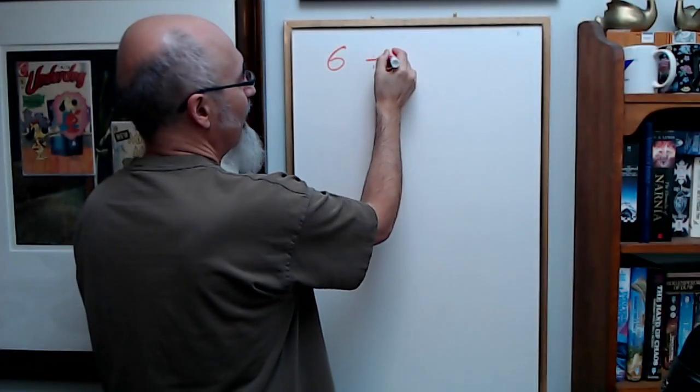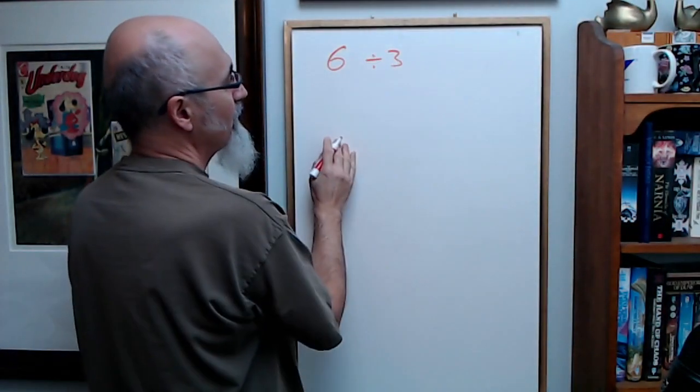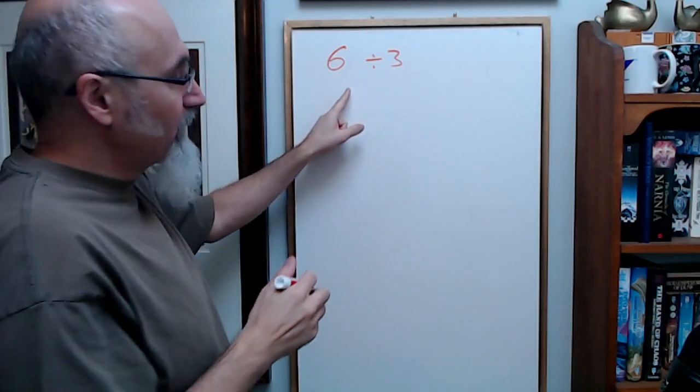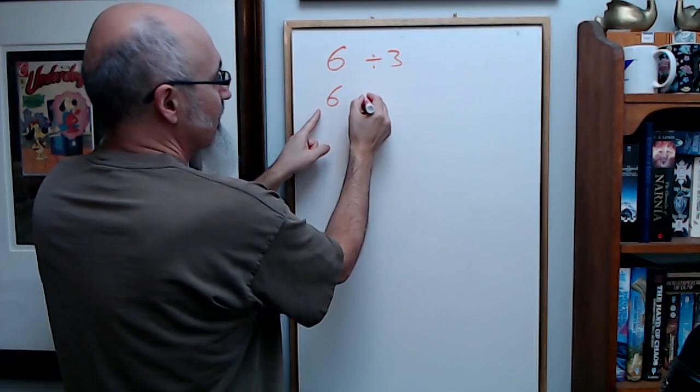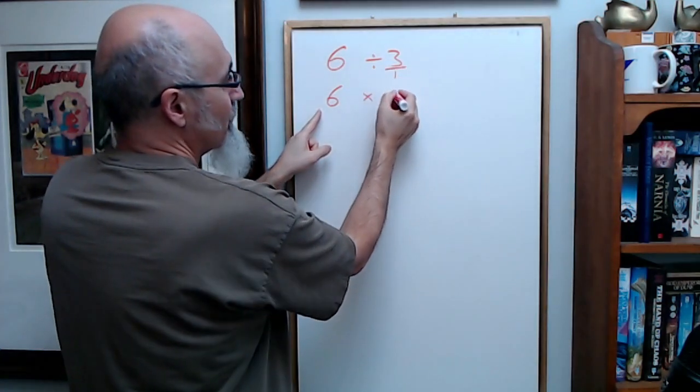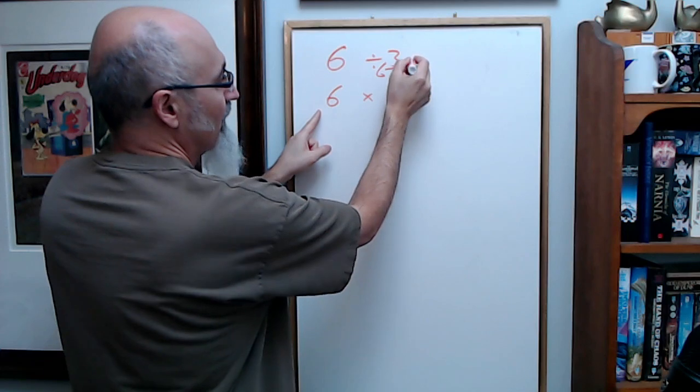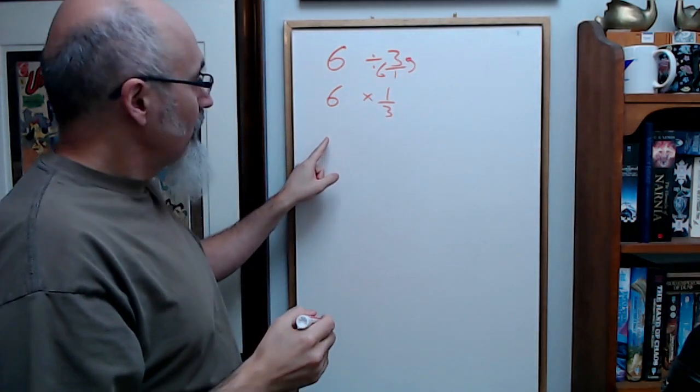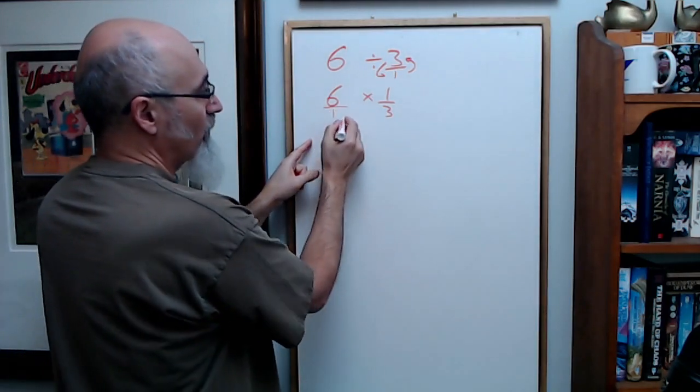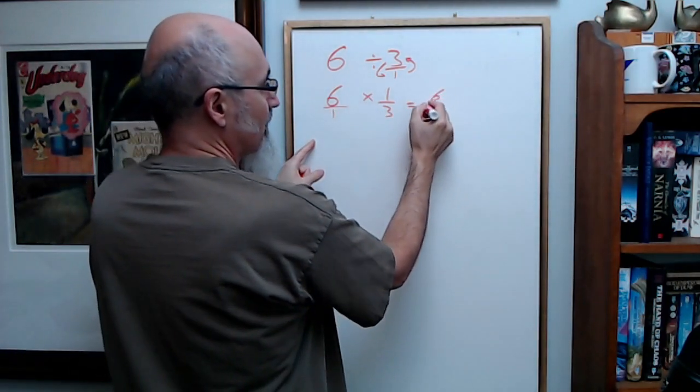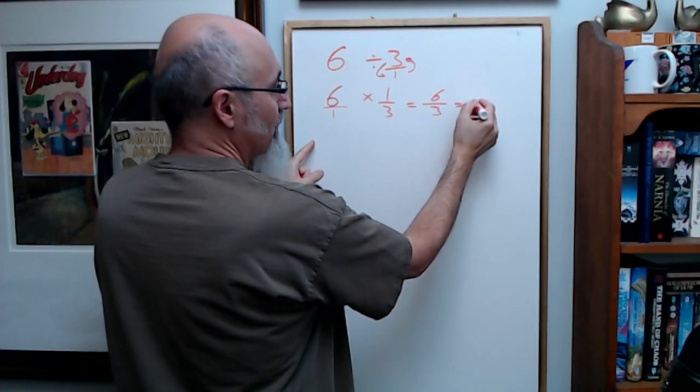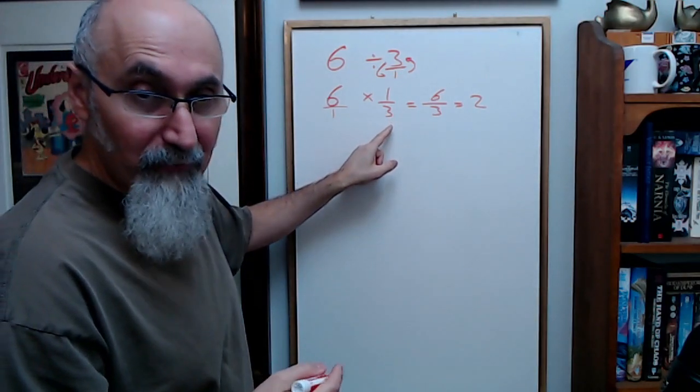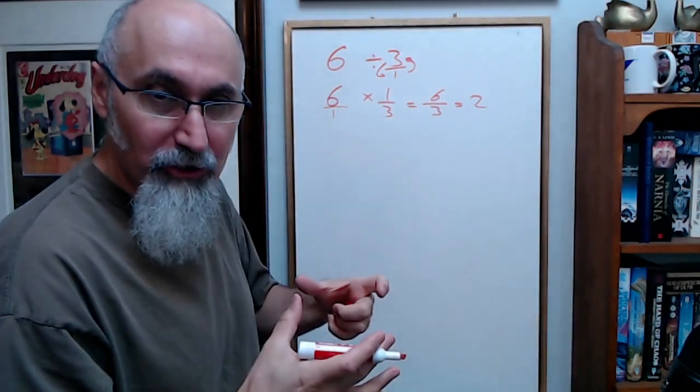So if you're doing 6 divided by 3, the division, if you're going to do this, convert to multiplication. 6 times, and this is 3 over 1. When you're doing this, you flip this and it becomes 1 over 3. So 6 times 1 over 3, and 6 is just over 1. This turns into 6 divided by 3, which is equal to 2. So you're taking 6, breaking it into 3 pieces that have 2 each.